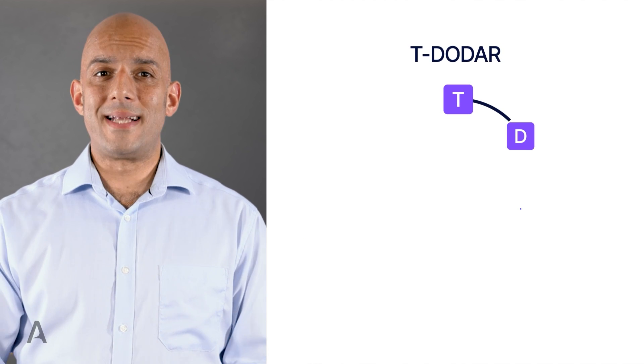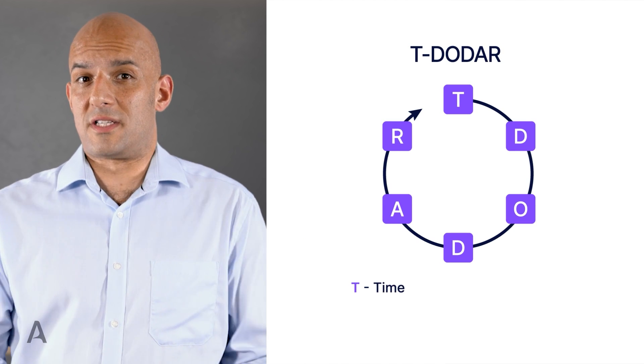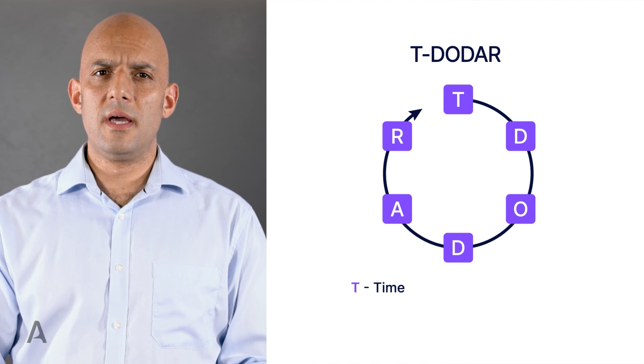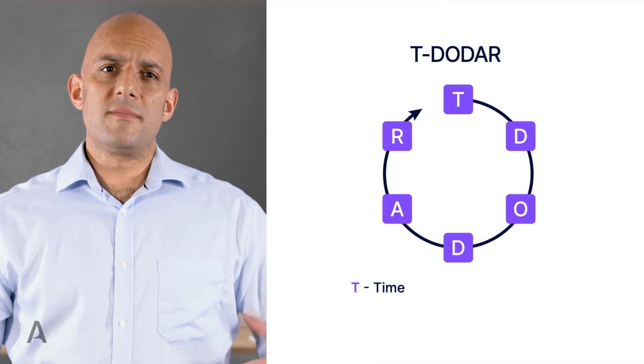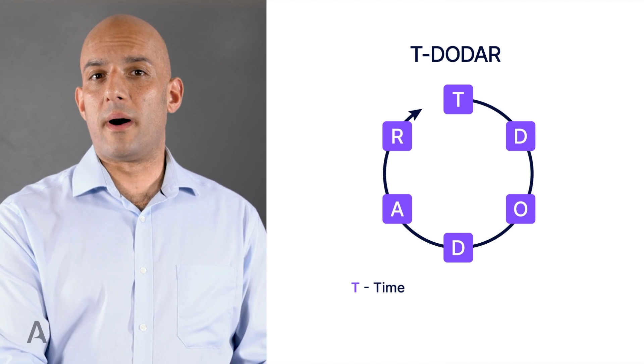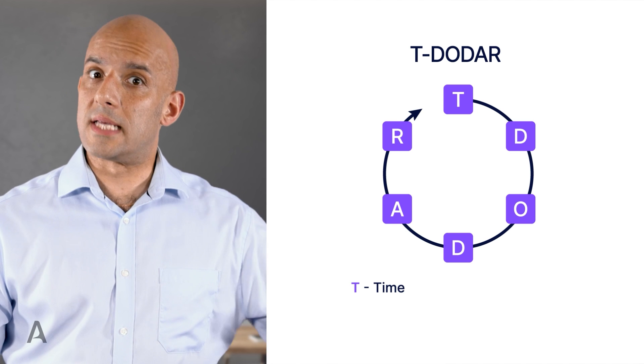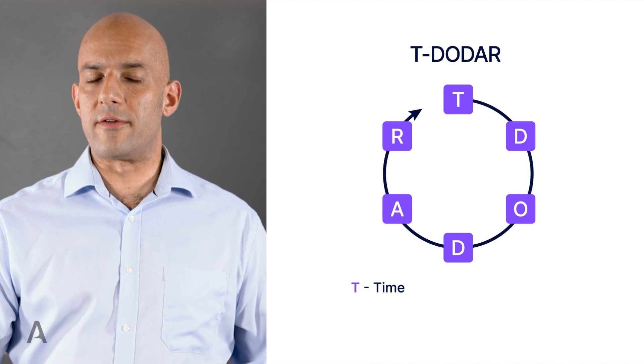First up goes by the mnemonic T-DODAR, where T stands for time and simply put refers to the time available to make the decision, which obviously differs from situation to situation. From say an engine issue on the ground where the engineer or pilot would have more time, than say an uncontrollable engine fire in flight.